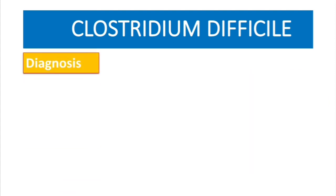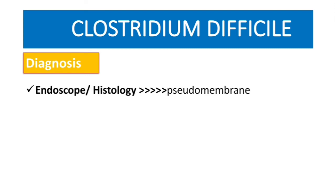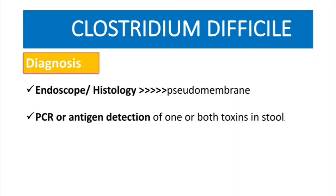For diagnosis, you can use endoscopy or histology, where you can actually see the pseudomembrane. However, the more specific method is PCR or antigen detection, which are specific for identifying one or both toxins in the stool. That is where you use polymerase chain reaction — PCR.